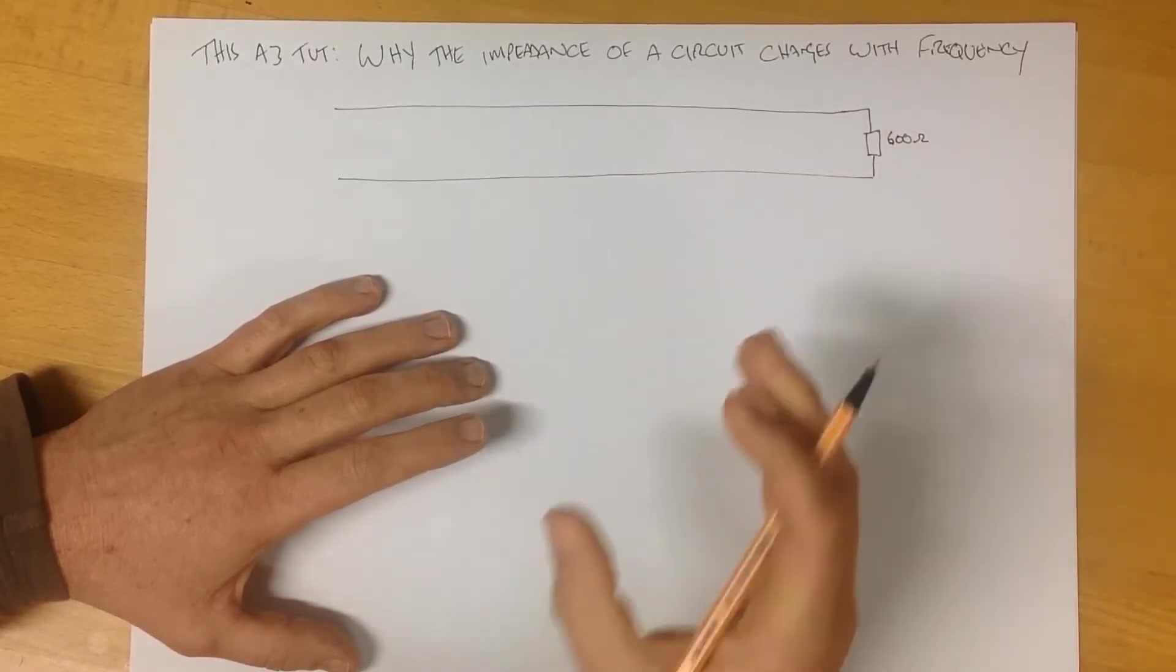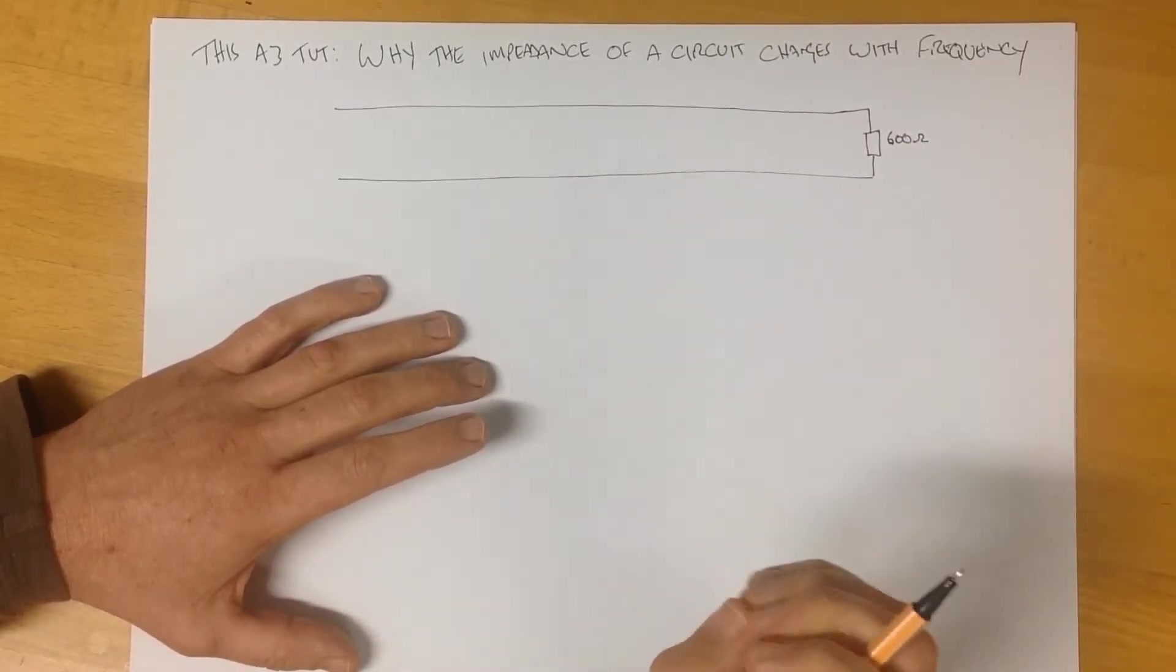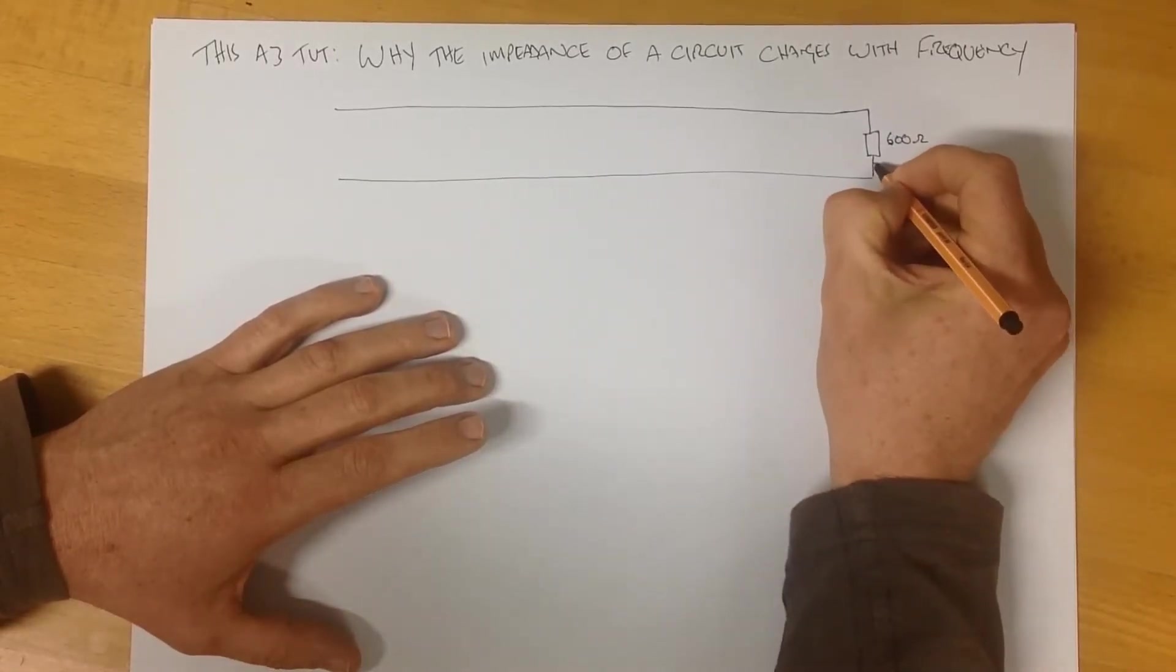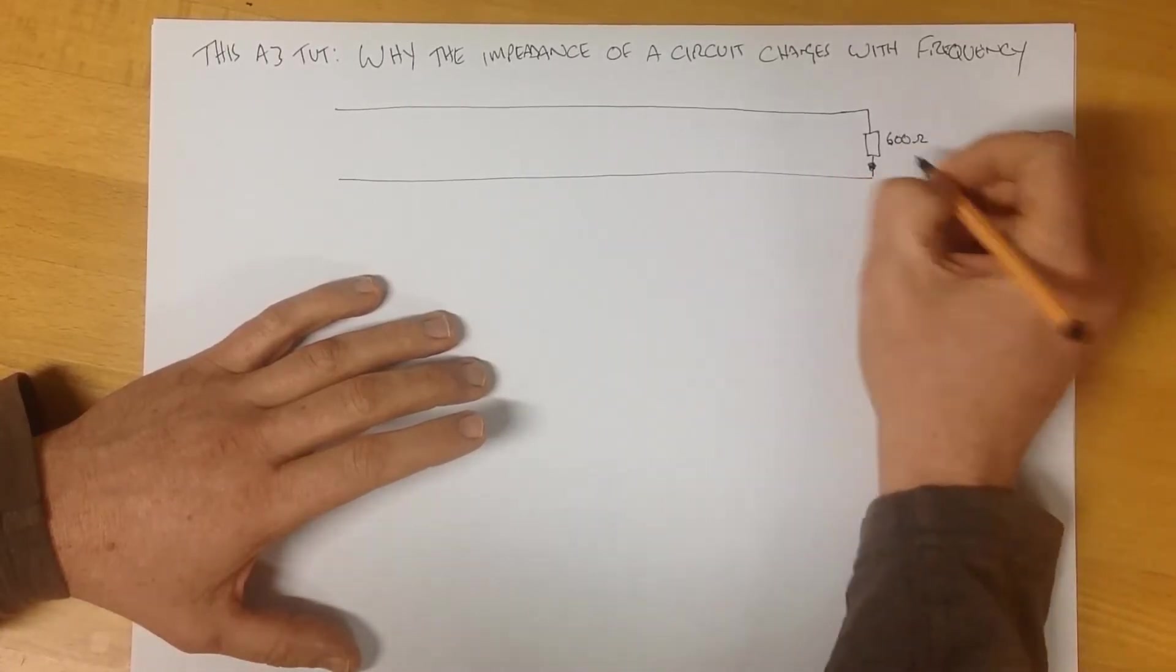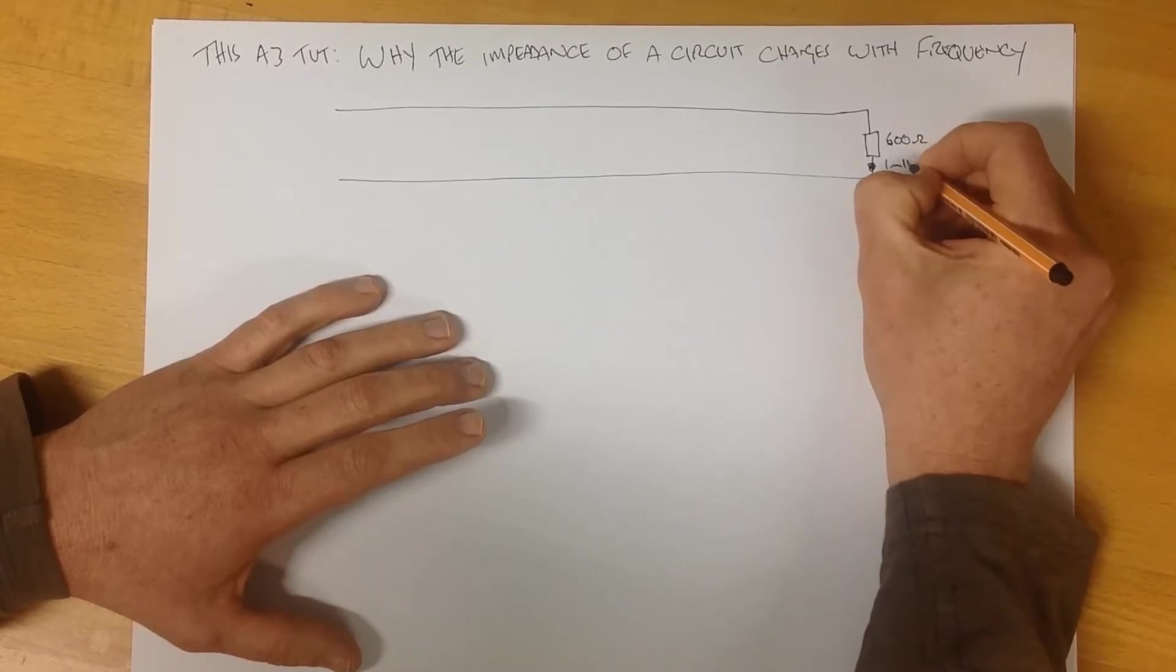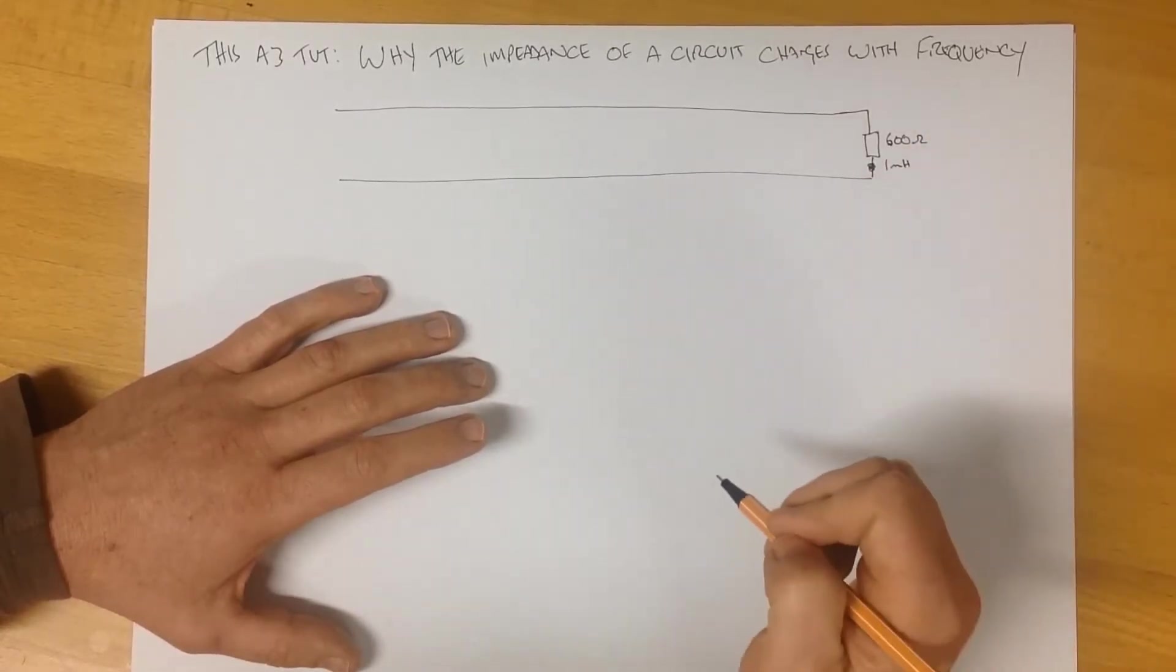Now, it is not purely 600 ohms. Very few impedances are purely resistive. You'll often find that it has a small amount of inductance. So here's a little bit of inductance, and for argument's sake, we're going to call it 1 millihenry. So it's got quite a small amount of inductance.